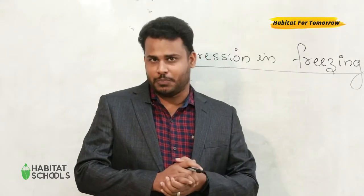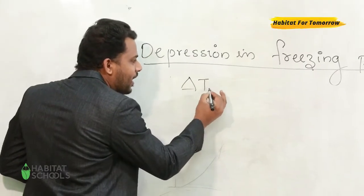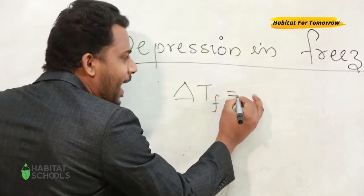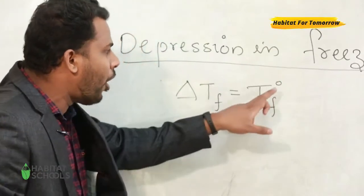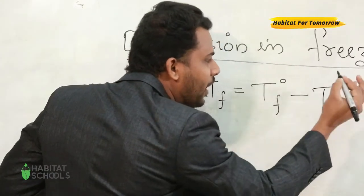The depression in freezing point is expressed as ΔTf, and it is defined as the temperature difference between the freezing point of the pure solvent and freezing point of the solution.